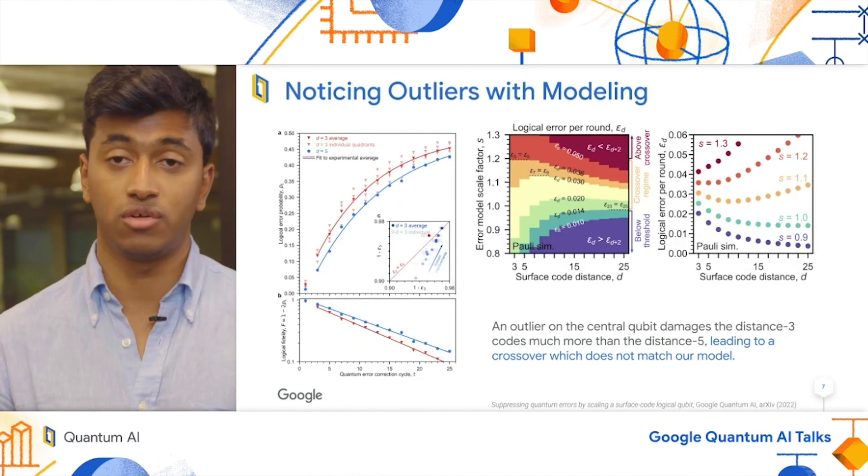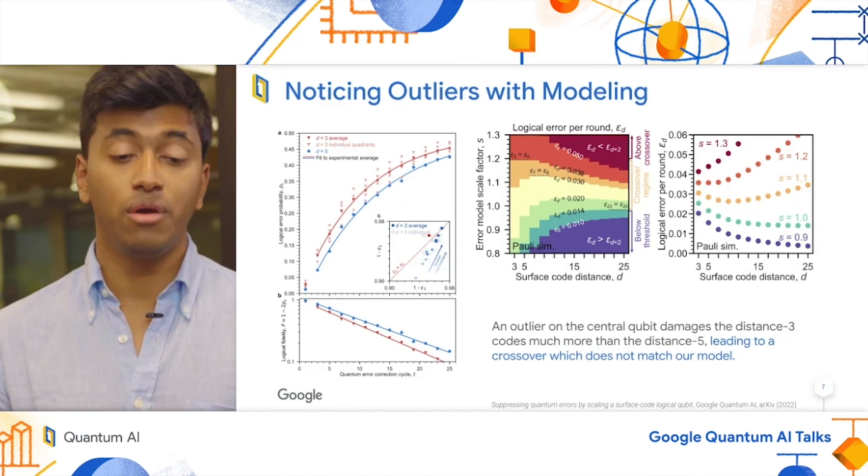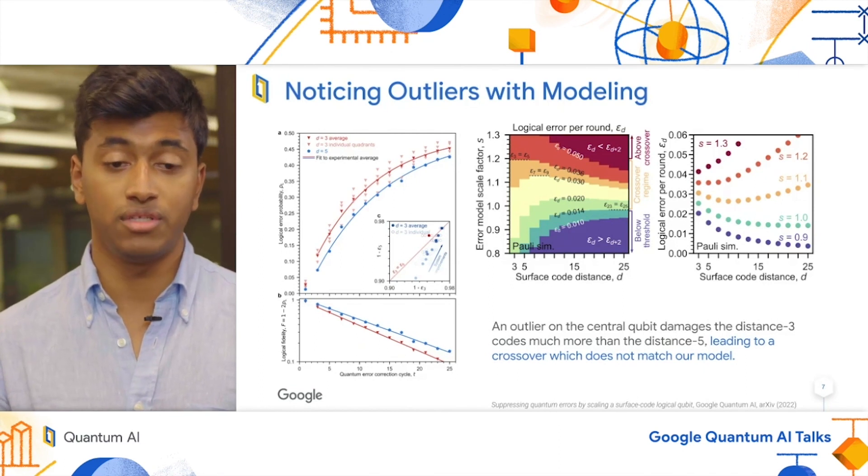and so the system was being tested when it wasn't in a great calibration state. However, we noticed that the distance 5 code dramatically outperformed all four distance 3 codes.